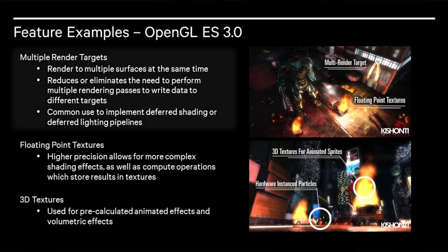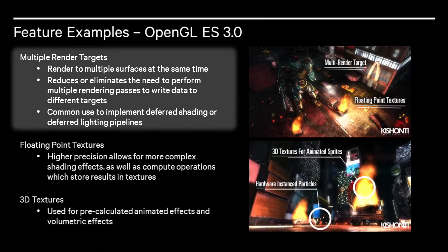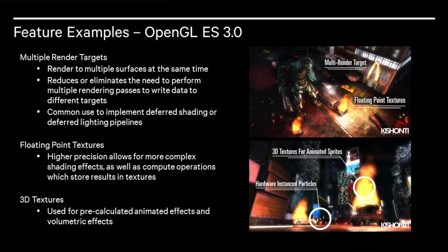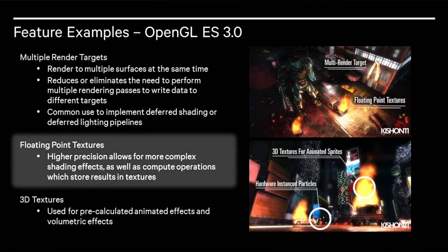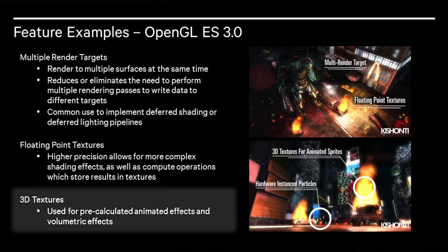Multiple render targets allow rendering to multiple surfaces at the same time, reducing or eliminating the need to perform multiple rendering passes to write data to different targets. The common use for this is to implement deferred shading or deferred lighting pipelines. Floating point textures were also added — higher precision allows for more complex shading effects as well as compute operations which store results in textures. Finally, support for 3D textures was added, used for pre-calculating animated effects and volumetric effects.